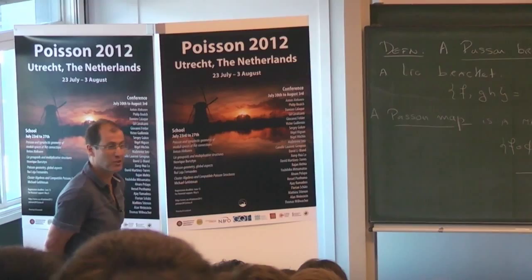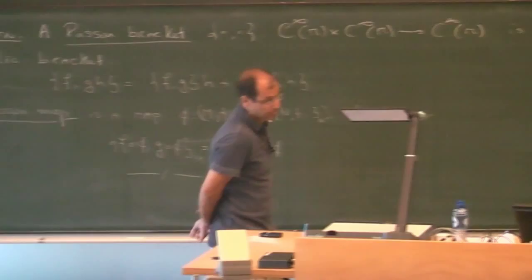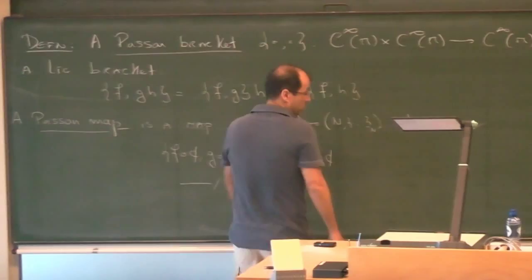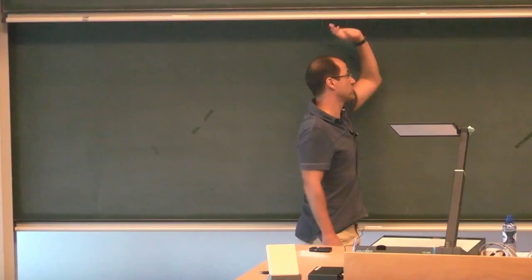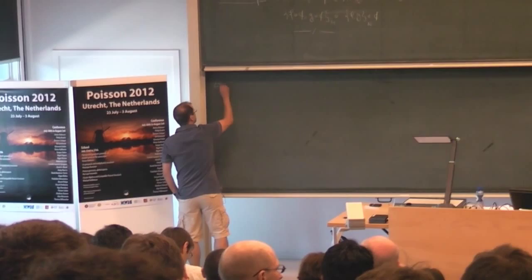But why should we care about Poisson brackets? Why should we study that? Some of you will know symplectic geometry. I assume the prerequisites for this course are a bit of differential geometry and a bit of symplectic geometry. In symplectic geometry you have seen a Poisson bracket, so let's recall that and start with our first example.